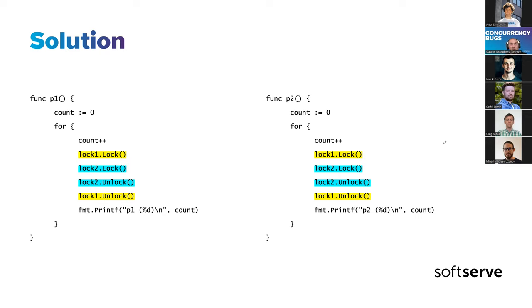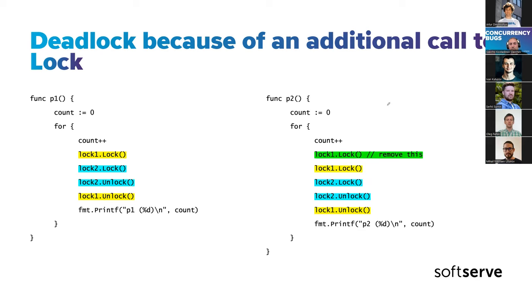Hopefully, more static analysis tools will emerge — the Go ecosystem is growing with the `sa` package, linters, and static analysis checkers. Another related issue: even with the correct order, adding one extra lock by mistake still causes a deadlock by incrementing the mutex counter again, leaving it in a locked state.